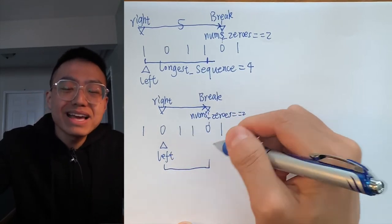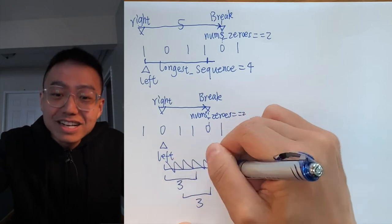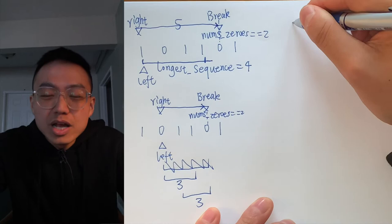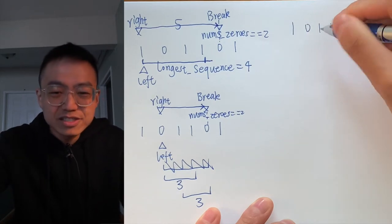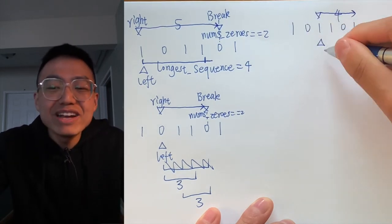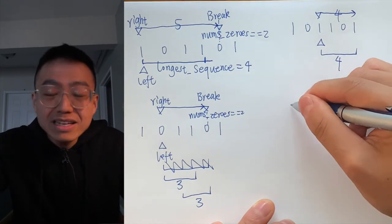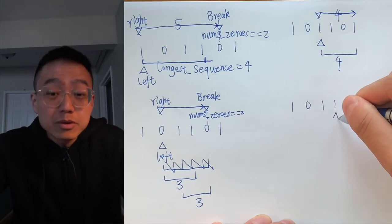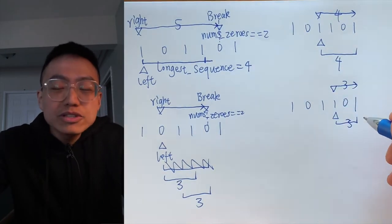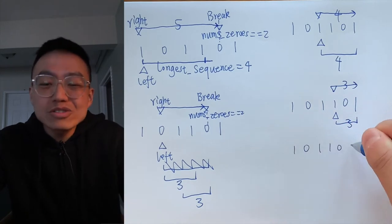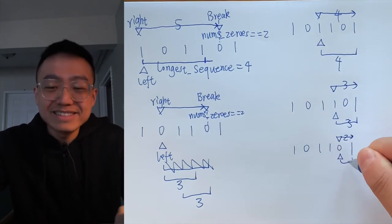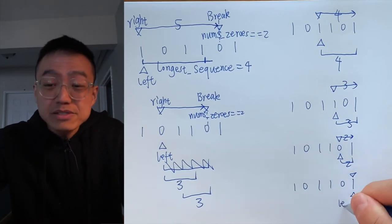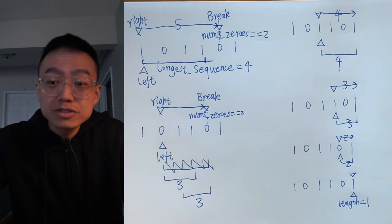The time complexity is O(n²). The nested for loop turns our approach into a quadratic solution, because for every index we have to check every other index in the array. The space complexity is just O(1) because we are using four variables: left pointer, right pointer, length zeros, and the longest sequence. The number of variables is constant and they don't change based on the size of the input.